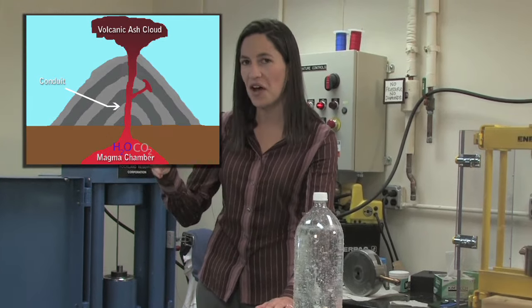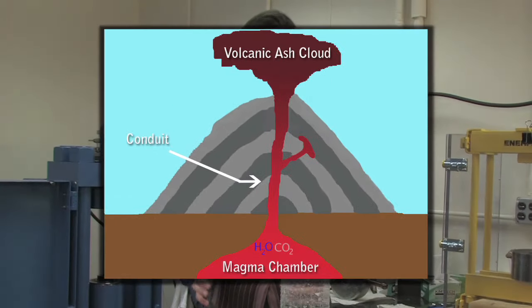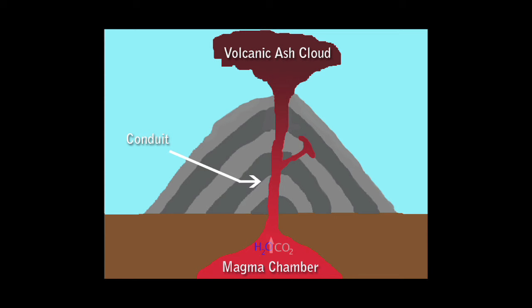A magma chamber is exactly analogous. In that case, we have volcanic gases, water and carbon dioxide, dissolved in the magma. When we uncork that volcano, the pressure falls, and those gases no longer want to be dissolved in that magma. So they form bubbles.